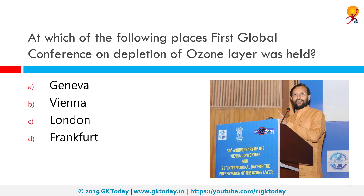At which of the following places was the first global conference on depletion of the ozone layer held? It was held in Vienna. The Vienna Convention for Protection of the Ozone Layer is a multilateral environmental agreement signed in 1985 that provided frameworks for international reduction in the production of chlorofluorocarbons due to their contribution to the destruction of the ozone layer and the resulting increase in the threat of skin cancer.